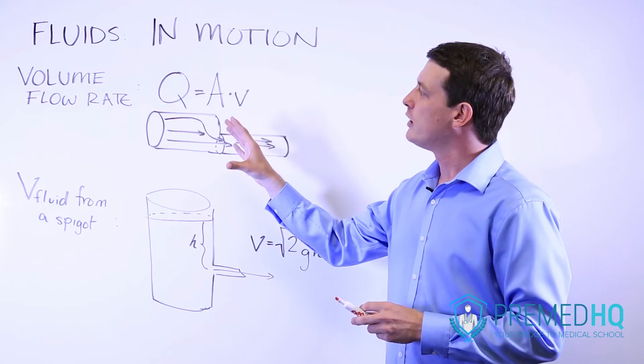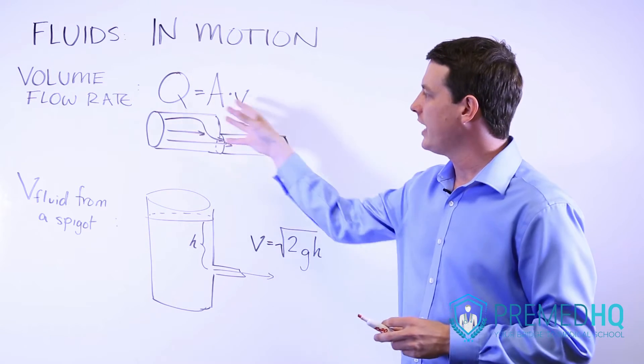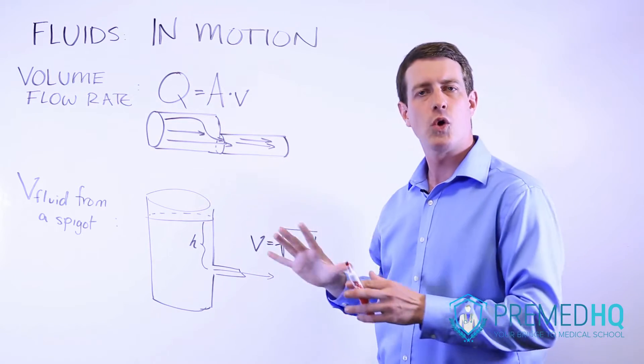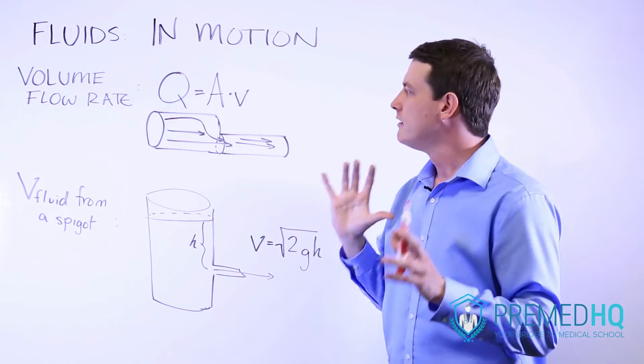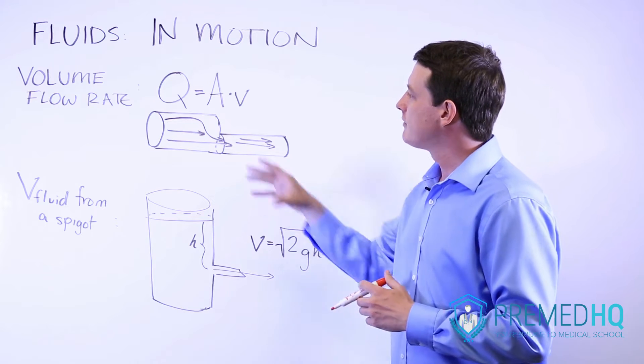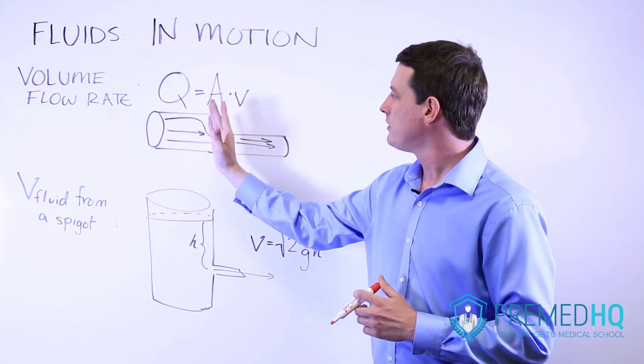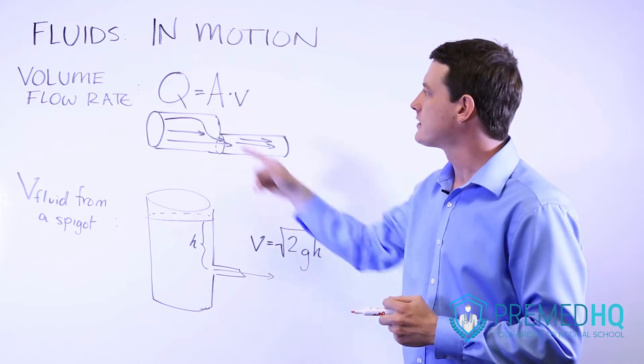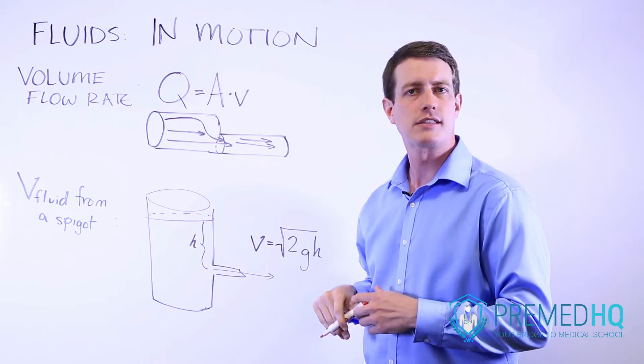Now, the volume flow rate is based on the premise that in any system of pipes or any flowing fluid, you have to have the same amount of volume traveling through each point in the system, and that is Q, the volume flow rate constant.